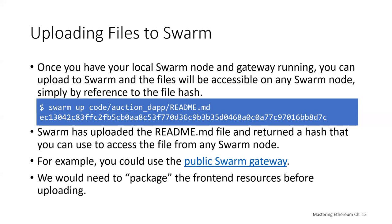This is very similar to what you can do on the Interplanetary File System, IPFS — once you upload a file, you can reference it using a unique identifier. Here's a quick example: I upload an auction DApp README file and get back a hash like EC13042, which is the hash referring to that specific README file. I can then use that hash from any Swarm node's public Swarm gateway to retrieve the README file.